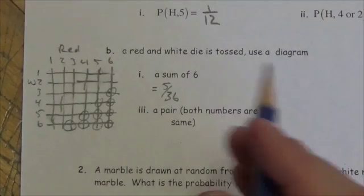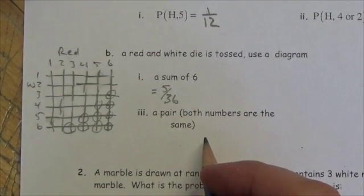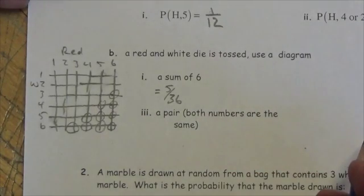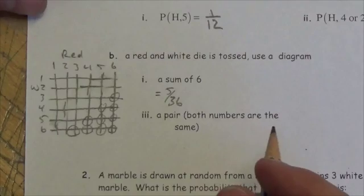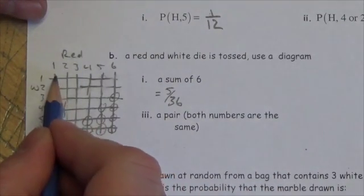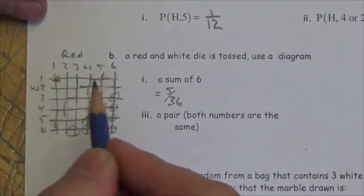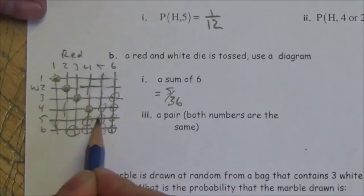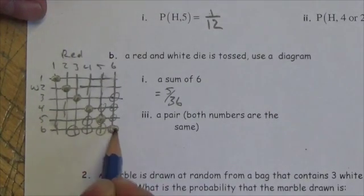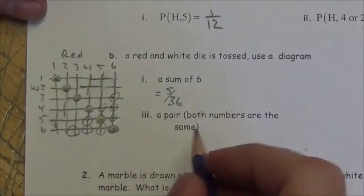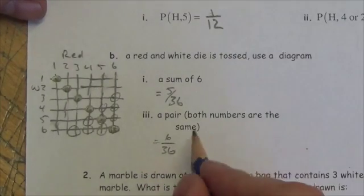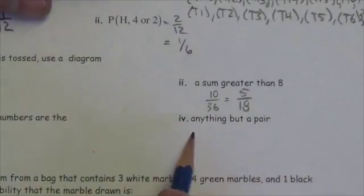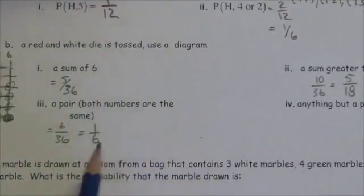Now I'm looking for the probability of getting a pair — both numbers the same. There would be one and one, two and two, three and three, four and four, five and five, six and six. So there are six possibilities out of 36 total outcomes, giving a probability of 1/6.